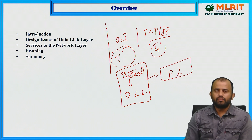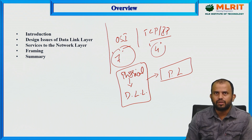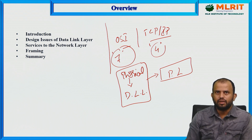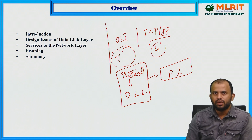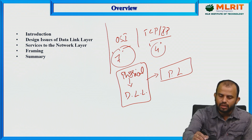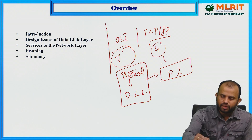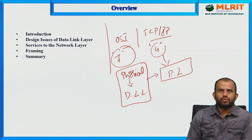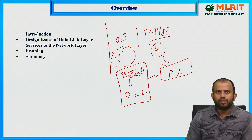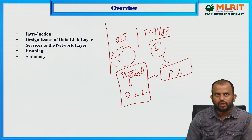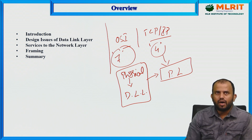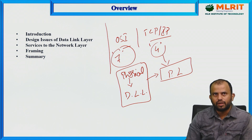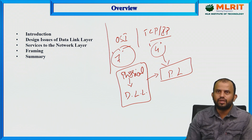The actions performed in the data link layer and physical layer are performed as a single merged layer in the TCP/IP reference model. Today's session we are going to discuss what are the design issues of the data link layer, what kind of services it provides to the network layer, and how we design the framing.